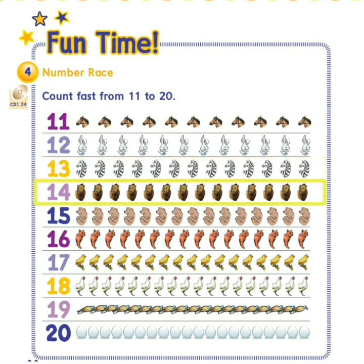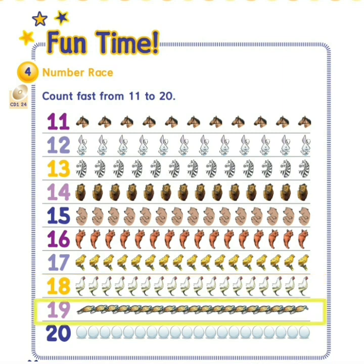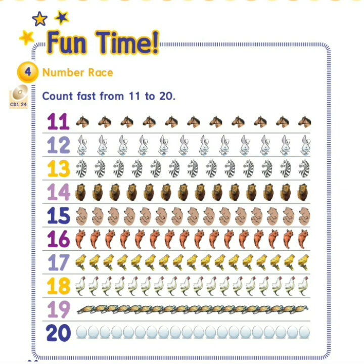16, 17, 18, 19, 20. 18 chickens. 19 turtles. 20 eggs. Okay. Good. We're finished.